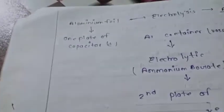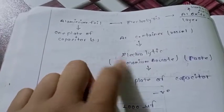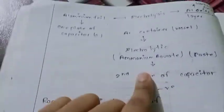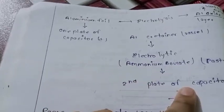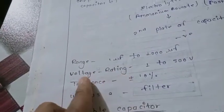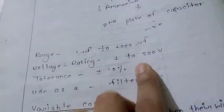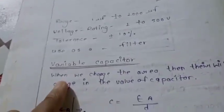The first aluminum foil and the aluminum container form the second plate of the capacitor. Ammonium borate is the second plate. Range is 1 microfarad to 1000 microfarad, voltage rating is 1 to 500 volts, tolerance is plus minus 10 percent. It is used as a filter.